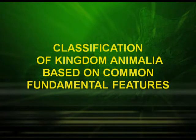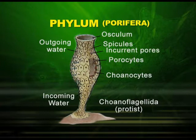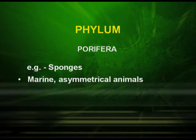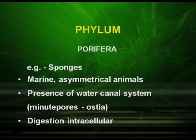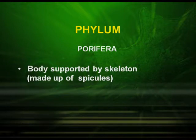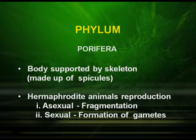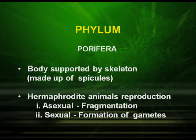Let us have a quick look at the classification of Kingdom Animalia based on common fundamental features. We will now start with the non-chordates. Phylum Porifera includes sponges. They are marine as well as asymmetrical animals. They have a water canal system, and their body has minute pores known as ostia. Digestion is intracellular and the body is supported by a skeleton made up of spicules. They are hermaphrodite animals, that is, the male and female are found in the same individual. Asexual reproduction takes place by fragmentation, and sexual reproduction is by the formation of gametes.